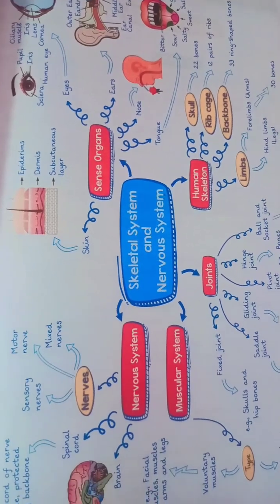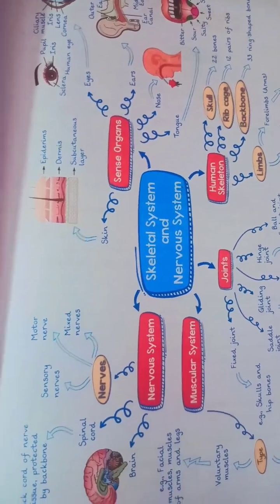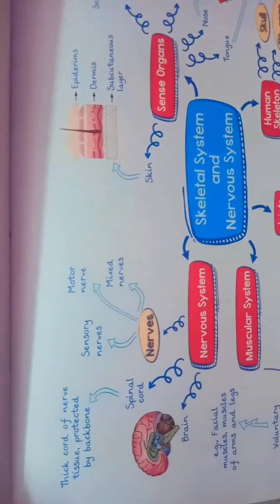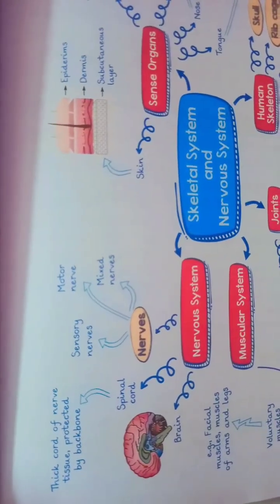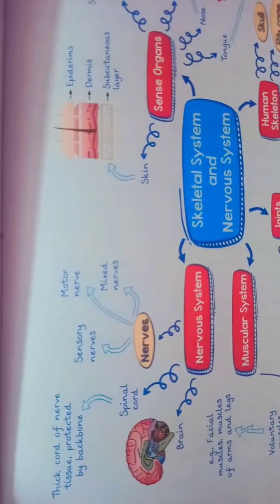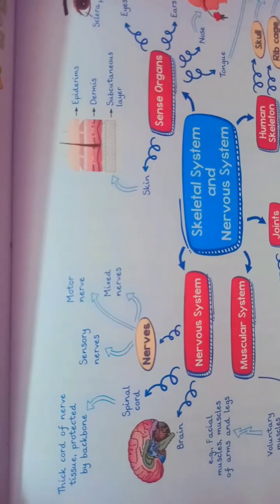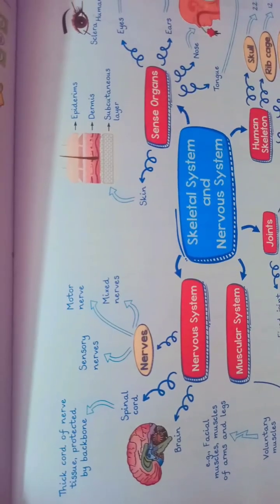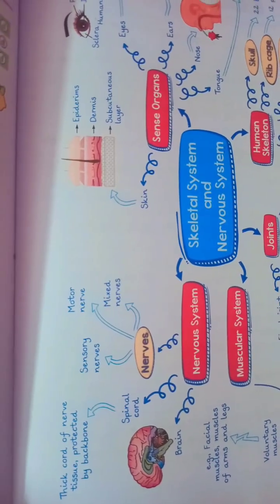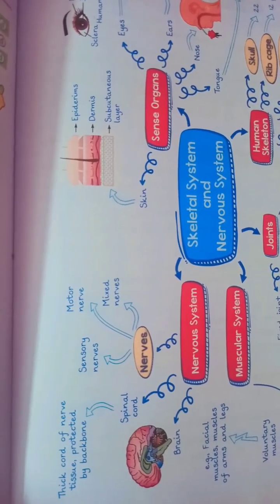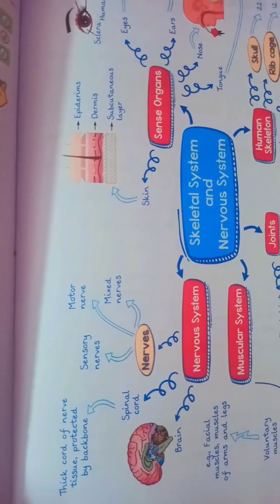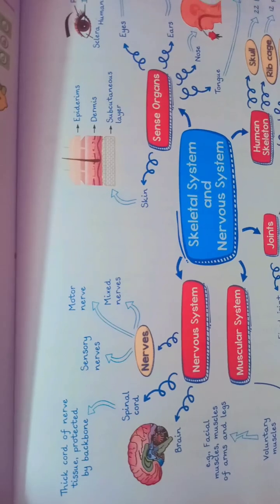The Nervous System consists of Nerves, Spinal Cord, and Brain. There are 3 types of Nerves: Sensory Nerves, Motor Nerves, and Mixed Nerves.